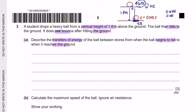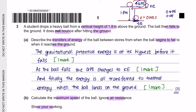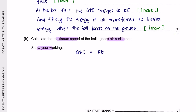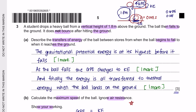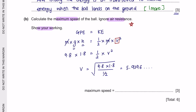For 3 marks, write the energy transfer sequence described. Question part B: Calculate the maximum speed of the ball, ignoring air resistance. Using conservation of energy, GPE = KE: mgh = ½mv². The mass cancels from both sides, so v = √(2gh) = √(2 × 9.8 × 1.8) = 5.939…, which rounds to 5.9 m/s.